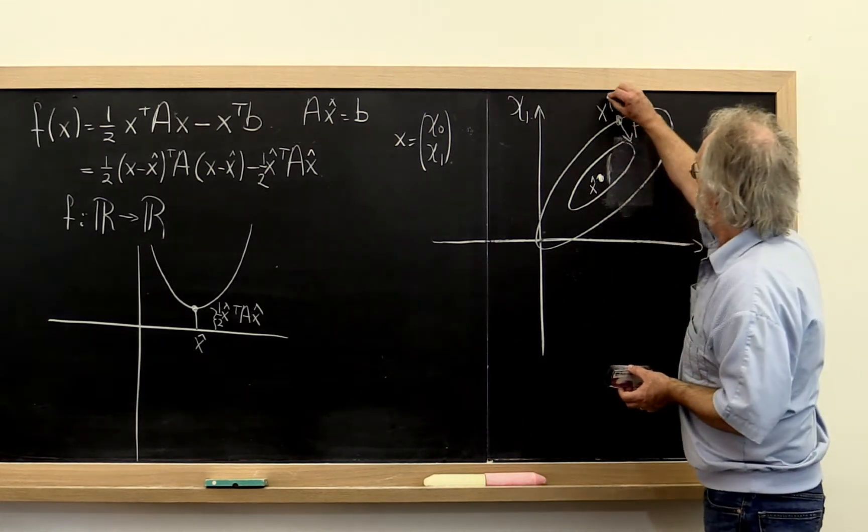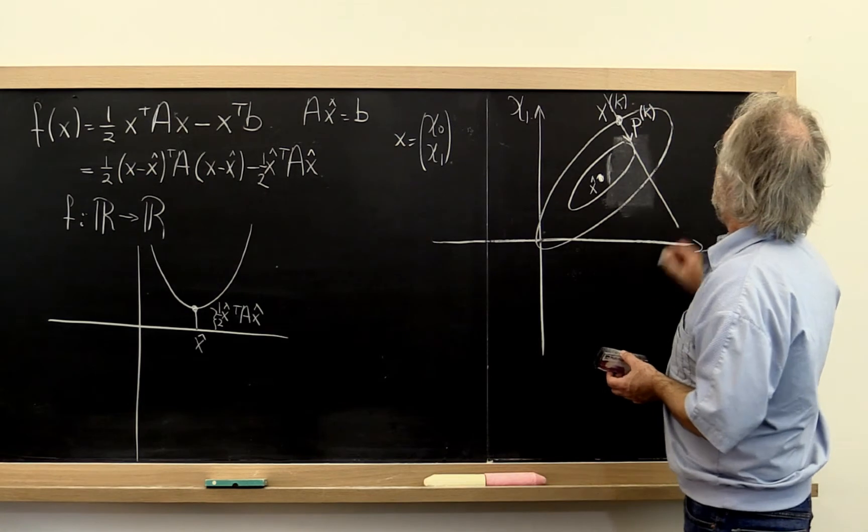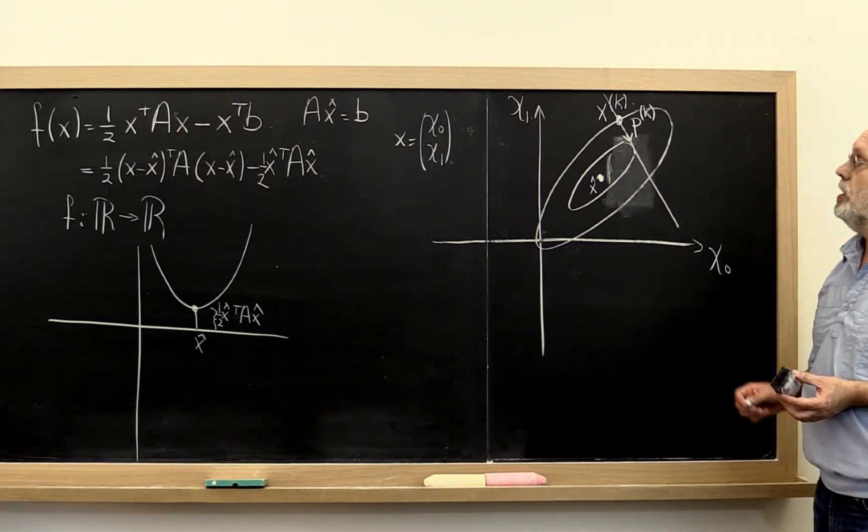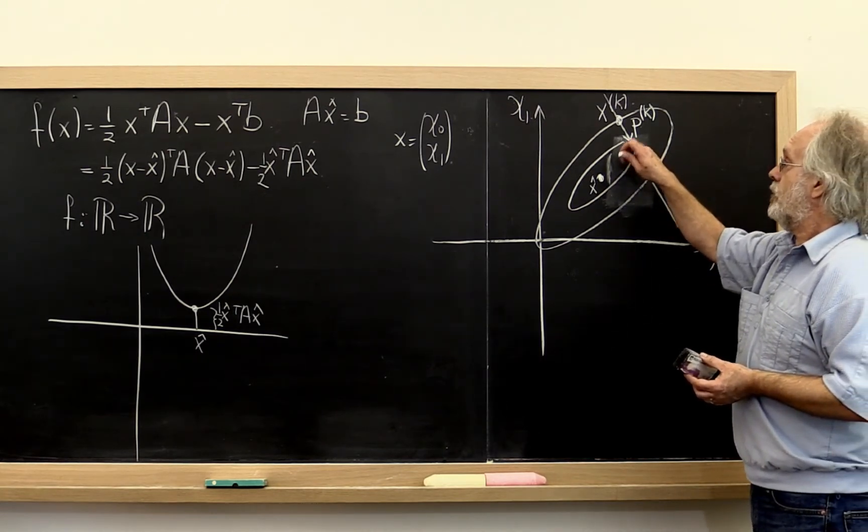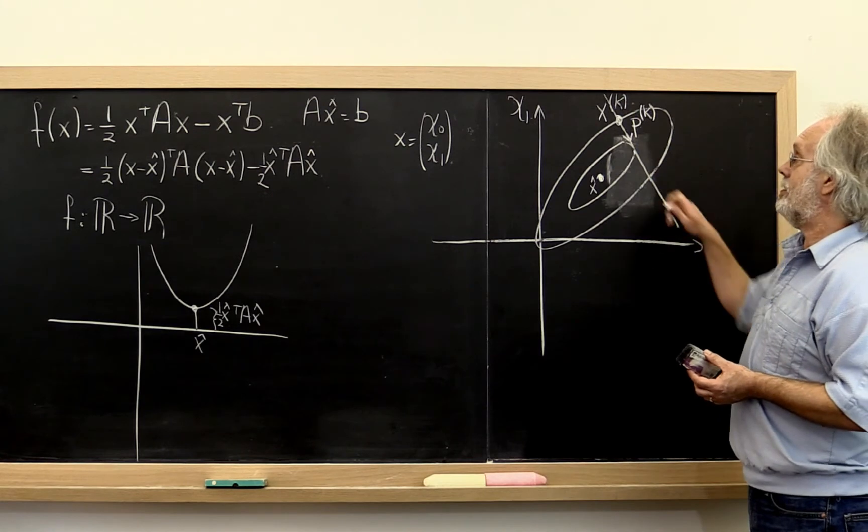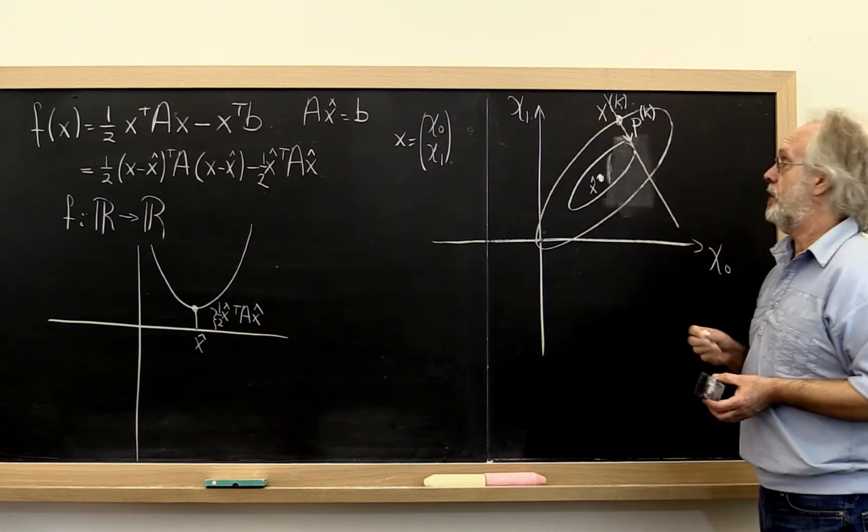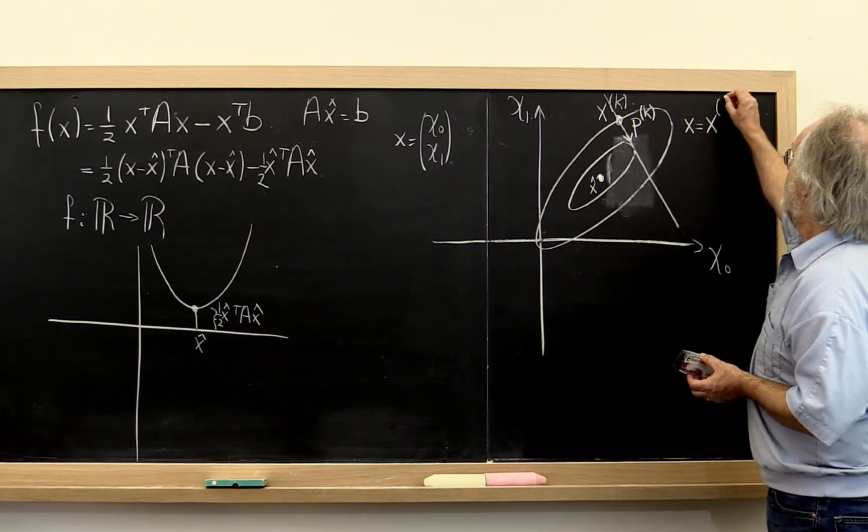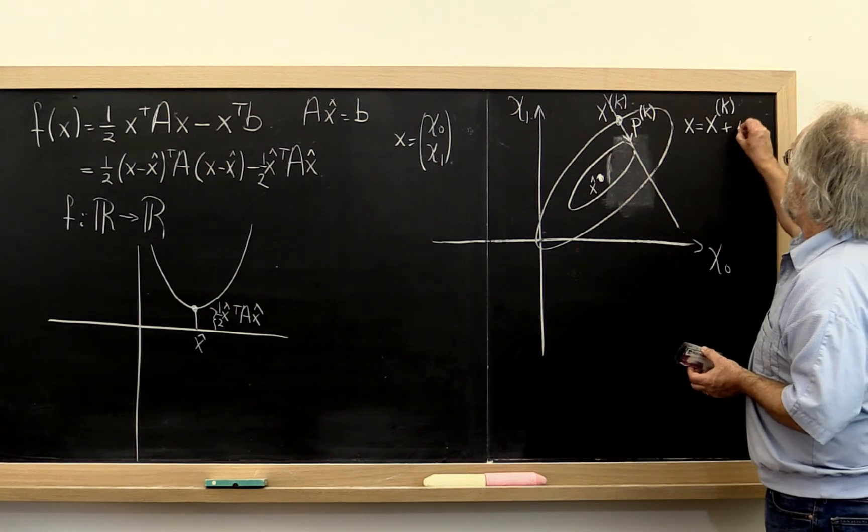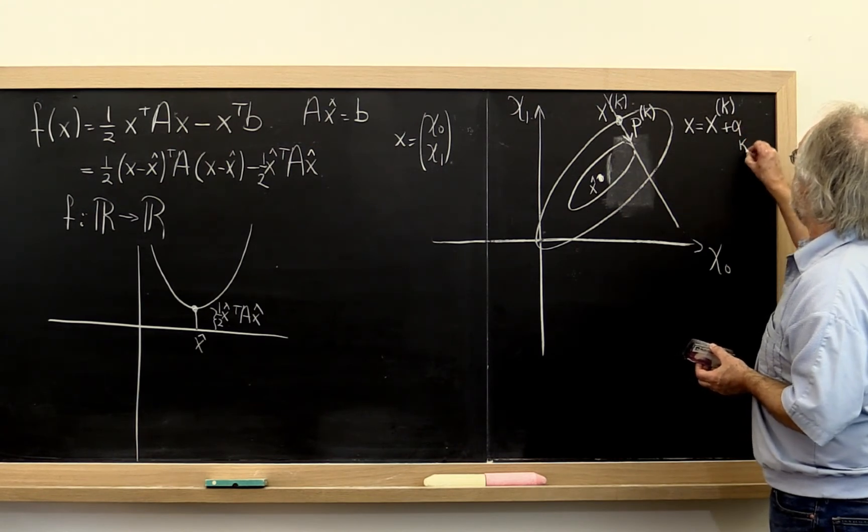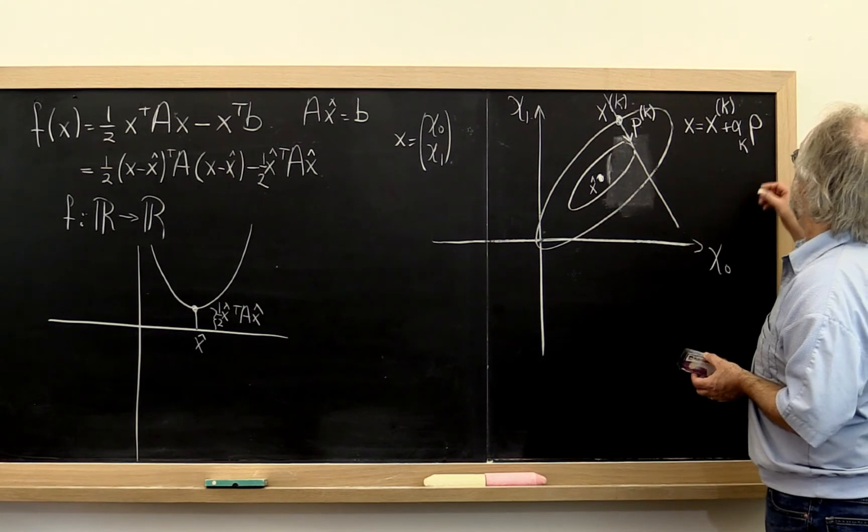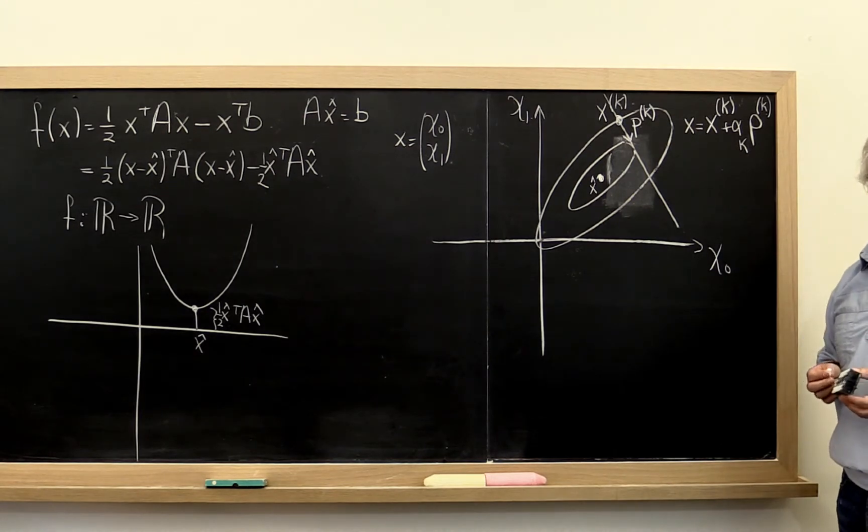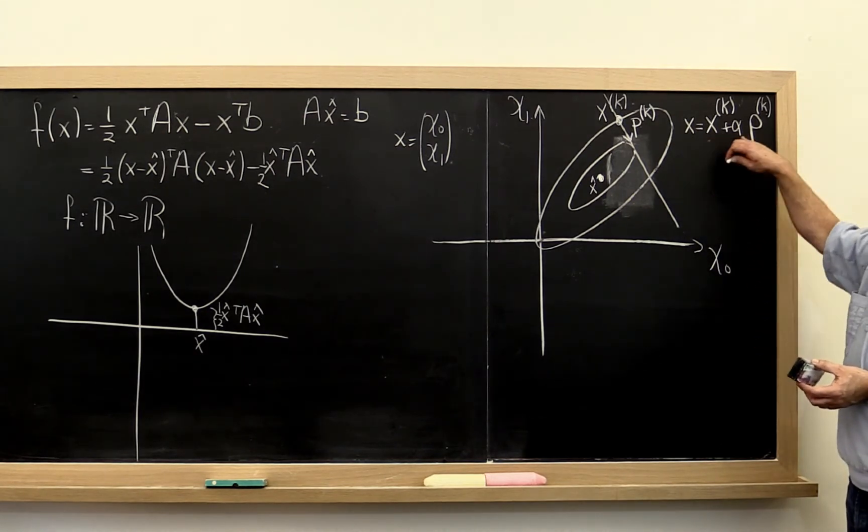Then if we draw the line like that in that direction, if we restrict our function to only live right there in that direction from our current point, in other words, if we only consider all values x that look like x^k plus some constant alpha k times the search direction p. Okay? Then all of a sudden we can say, Oh!